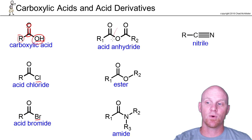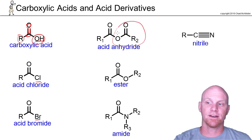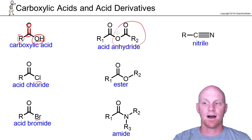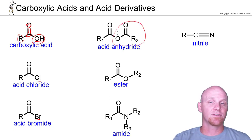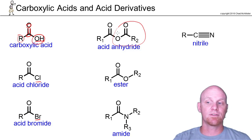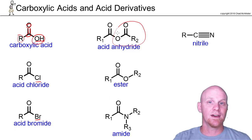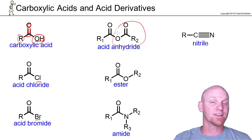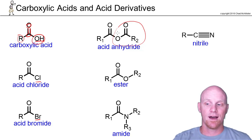If instead of an OH you've got a carboxylate group, that's an acid anhydride. It's made from two carboxylic acid molecules. If they're identical, it's a symmetric anhydride; if they're not identical, it's an asymmetric anhydride.